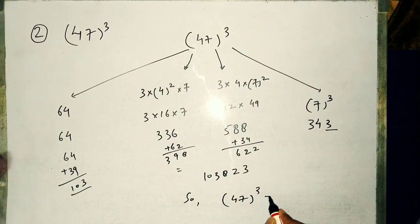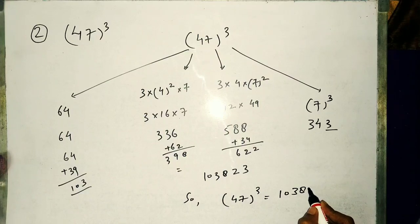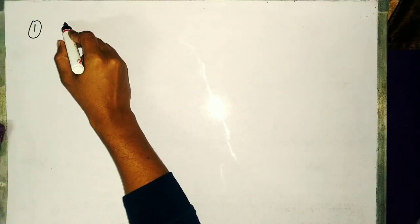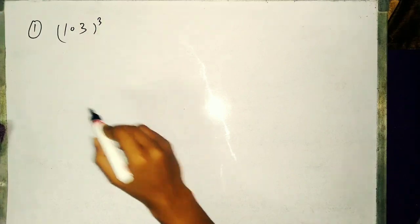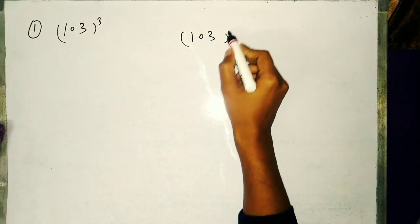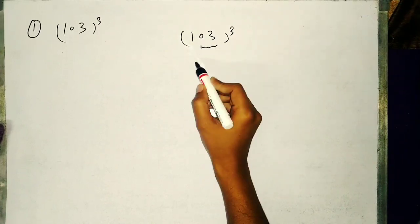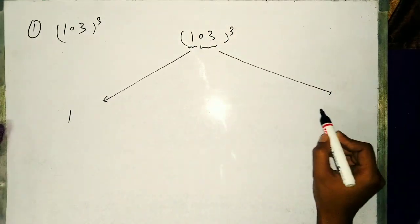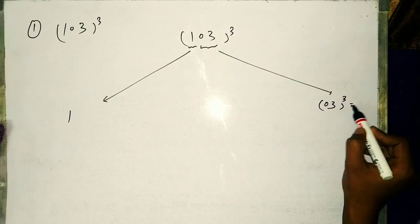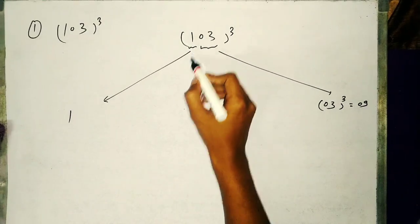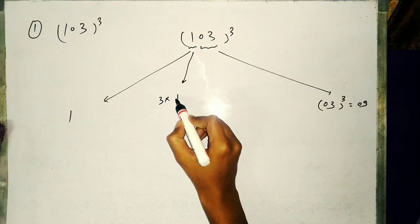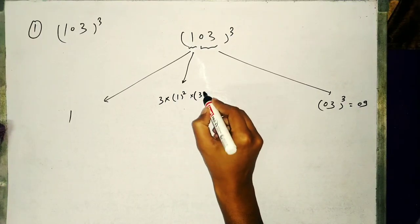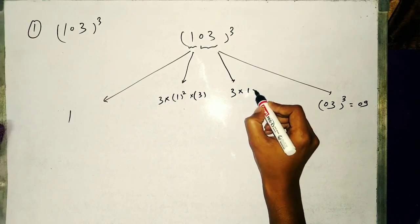Cube of 47 will be 103823. Now we will find cube for a 3-digit number. Suppose 103 cube we have to find. Similarly, 103 as previous we will take 03 as second digit and 1 as first digit. So 1 cube is 1 and 03 cube will be 9.